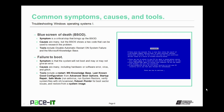The first symptom we're going to talk about is the BSOD — the blue screen of death. A critical stop brings up the BSOD. There are many things that can cause it. The nice thing is that it usually provides a hex code at the bottom that you can use to research the problem. Tools to help resolve this include disabling automatic restart on system failure so you can capture the code, then using Microsoft's knowledge base to research it.